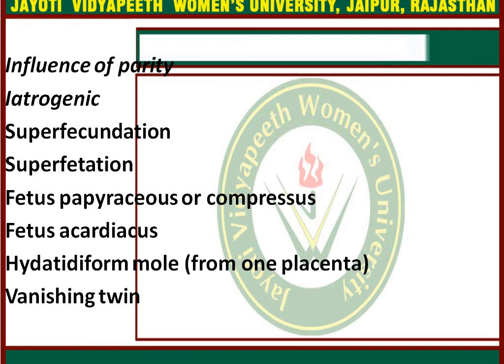Regarding lie and presentations in twin pregnancy: the most common lie is longitudinal, but malpresentations are quite common. The combination of presentations: both vertex occurs in 50% of cases; first vertex and second breech in 30%; first breech and second vertex in 10%; both breech in 10%; first vertex and second transverse and other combinations also occur. The rarest is both transverse, where the possibility of conjoined twins should be ruled out.